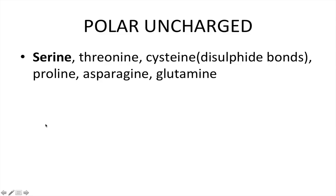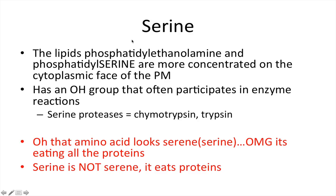On to the polar uncharged group — we'll look at serine. Connecting back to the lipid and membrane lectures: two phospholipids more concentrated on the cytoplasmic face of the plasma membrane include phosphatidylserine and phosphatidylethanolamine. The R group for serine has an OH group that often participates in enzyme reactions. There is a class of proteases called serine proteases, which include chymotrypsin and trypsin — the serine in their active site uses its OH to cut proteins. Memory aid: 'serine is not serene — it eats proteins.'